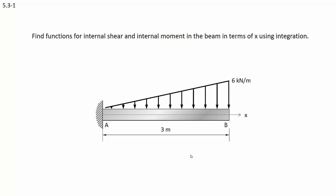Here's our beam. It's a cantilever beam with a fixed support at A and free at end B. The beam is 3 meters long. There is a triangular distributed load applied with a maximum of 6 kN per meter at point B. There is an x-axis with the origin at point A.